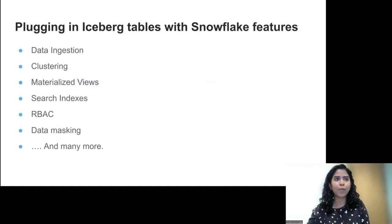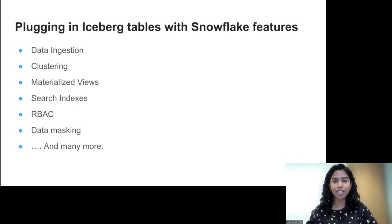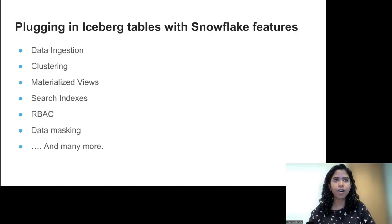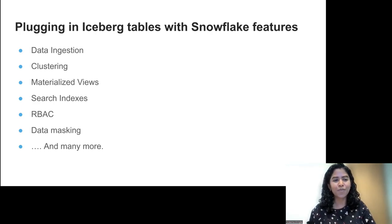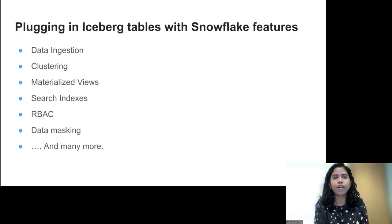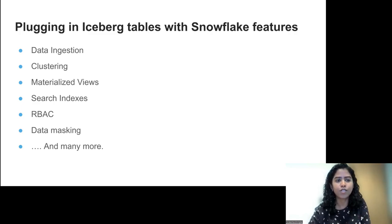Running Iceberg tables through Snowflake gives you all of Snowflake's transactionality guarantees — ACID transactions, isolation, and multi-statement, multi-table transactions. In addition, you get all other Snowflake features: continuous data ingestion, clustering, materialized views, search indexes, row-based access control, data masking, and everything else Snowflake supports. So using Iceberg tables in Snowflake makes them really powerful. You can still use your existing Spark jobs and Trino queries unchanged, while using everything in Snowflake as is.